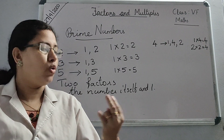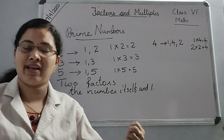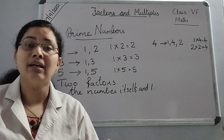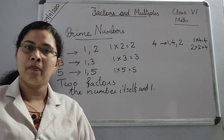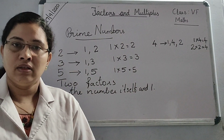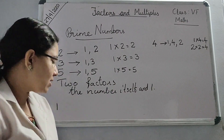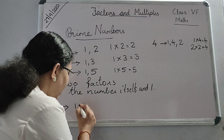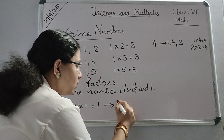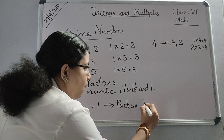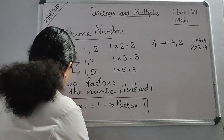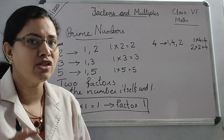If you take 7, only 1 and 7 are the factors of 7, so 7 is a prime number. But when we take 1 — how many factors are there for 1? 1 into 1 is equal to 1, so the only factor is 1 itself. So is 1 a prime? No, it is not a prime.